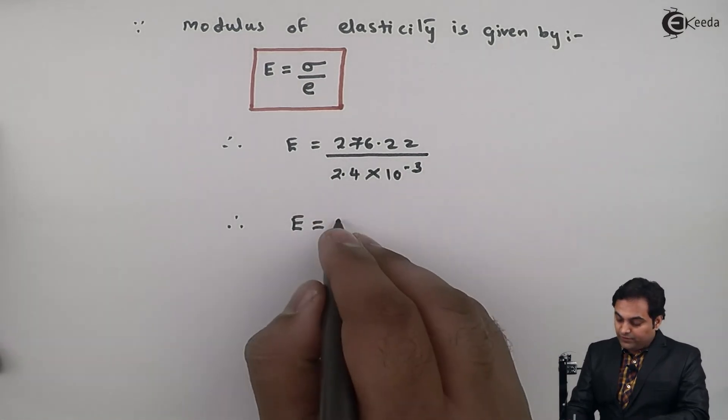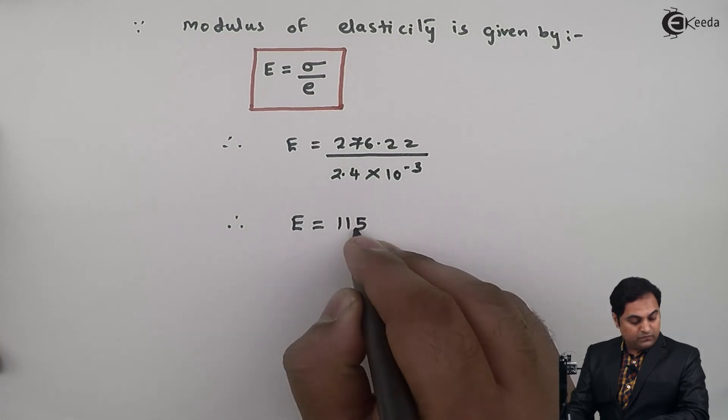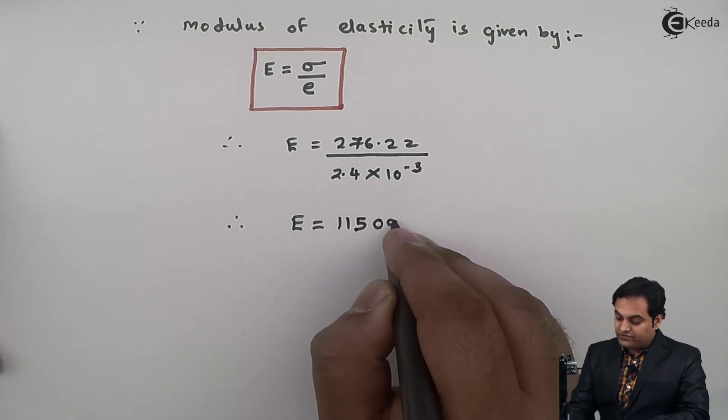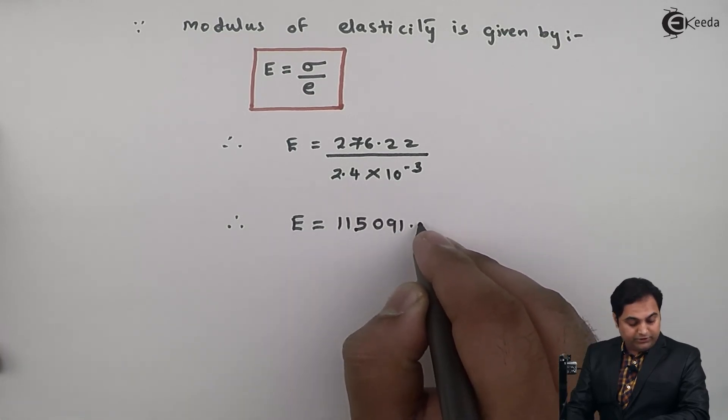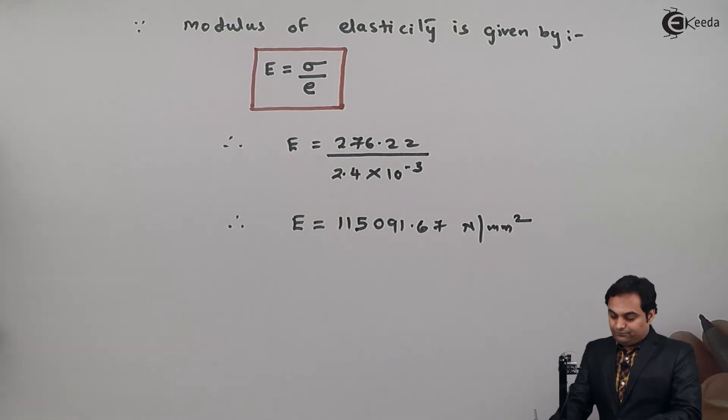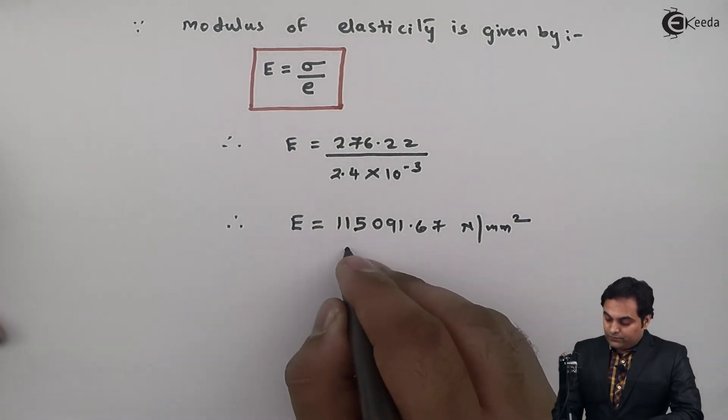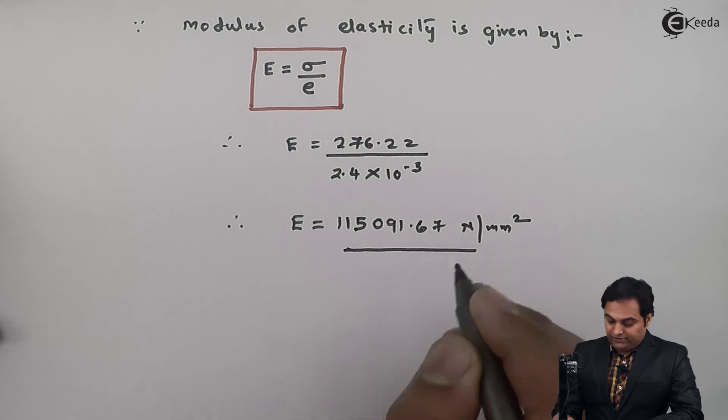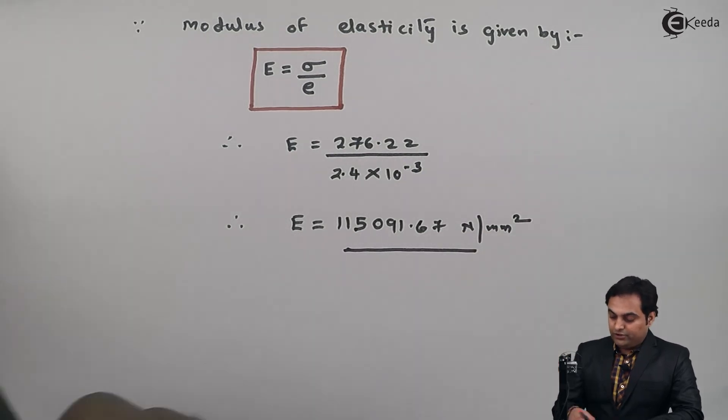It comes out to be 115091.67 Newton per mm². So this is the answer of Young's modulus, or you can say modulus of elasticity.